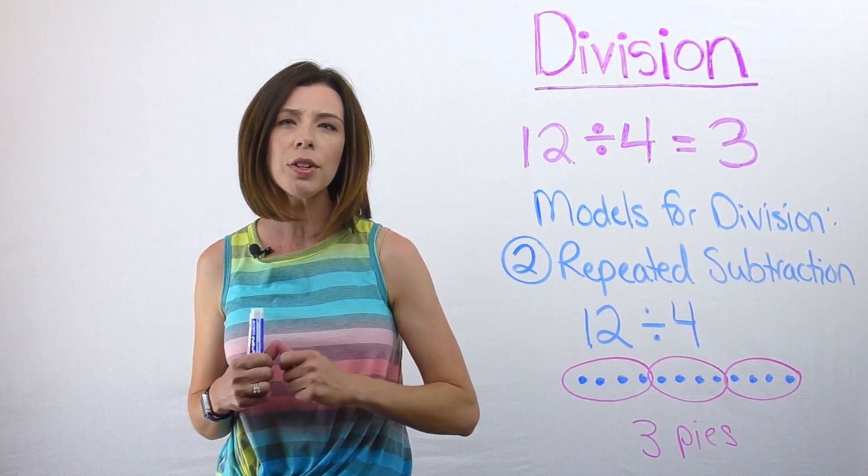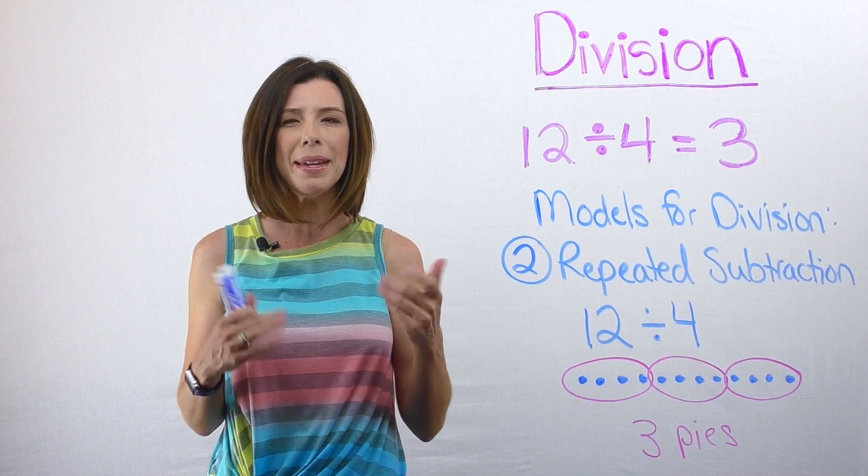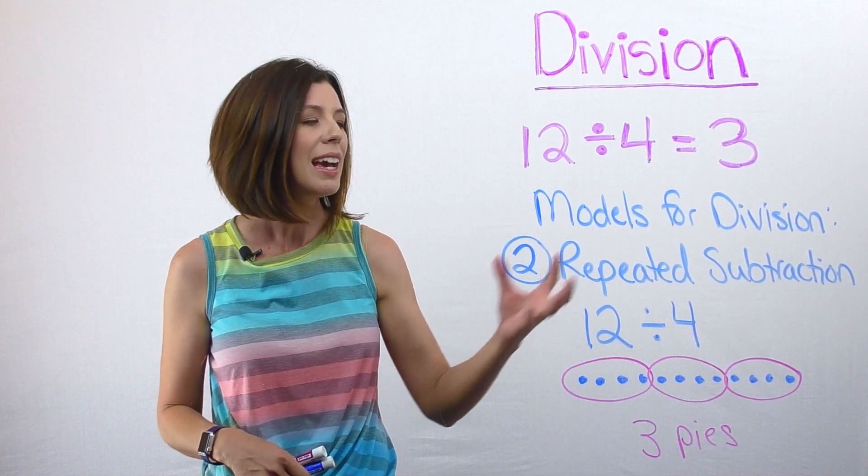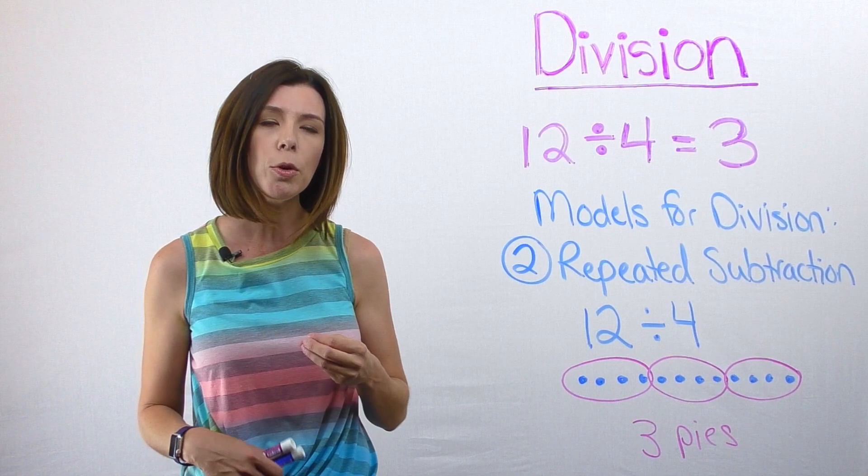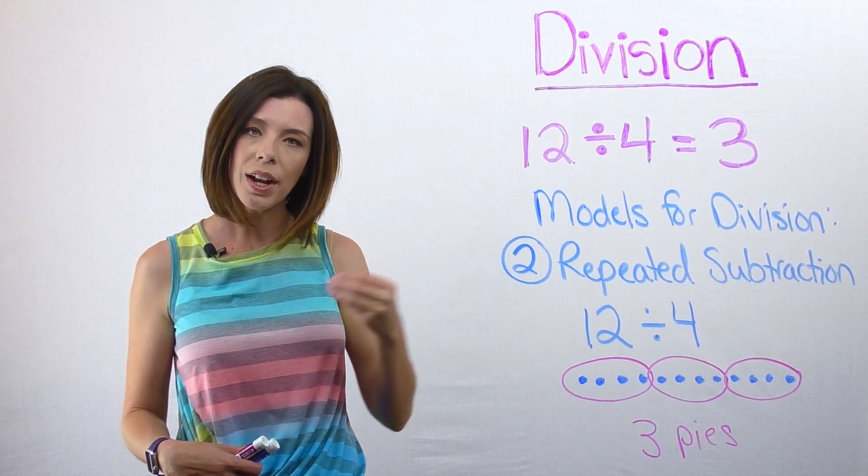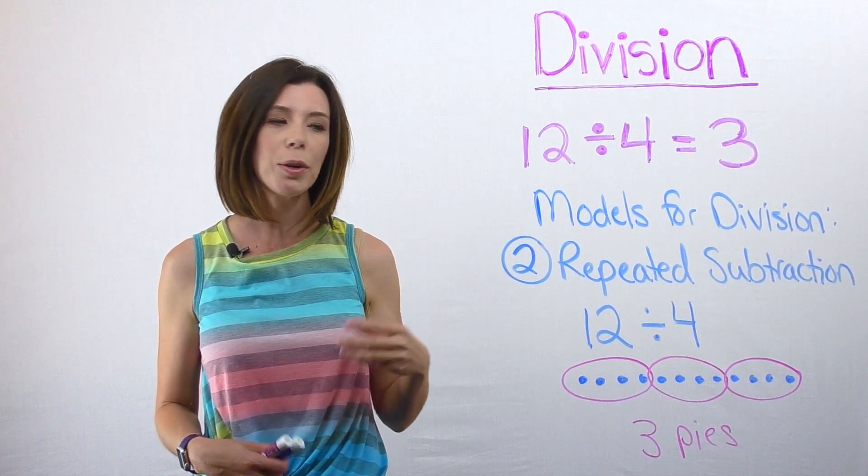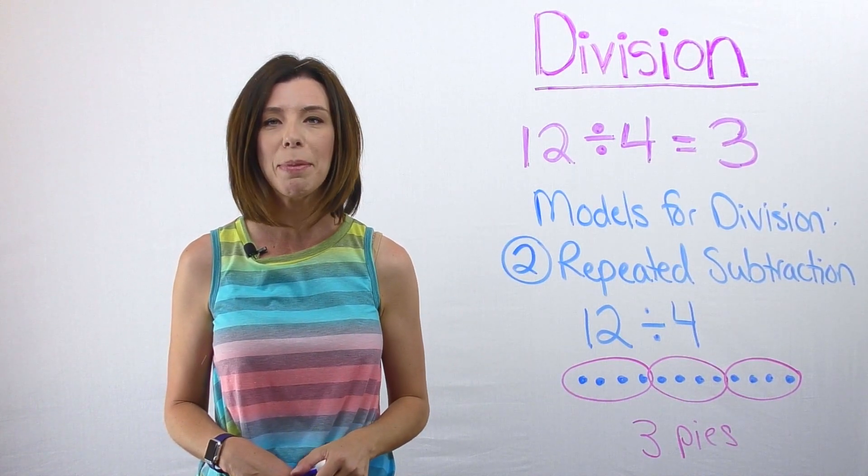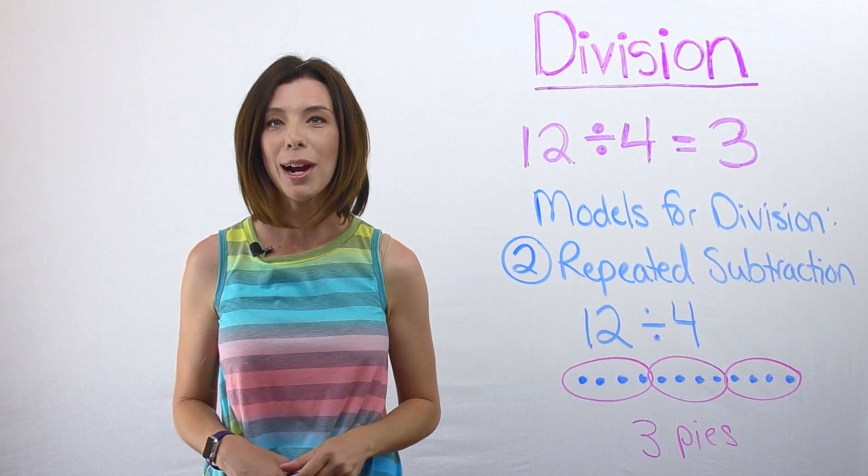In this case, I'm not doing one banana for each pie, because I'm not totally sure how many pies I'm going to be able to make. I'm literally just taking a group of four away from my total, making a pie, taking another group, making a pie, taking another group, and I realize that I can make three pies. This is the repeated subtraction model.